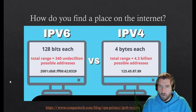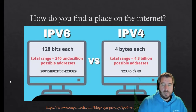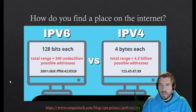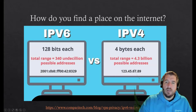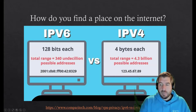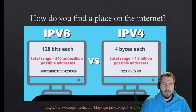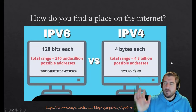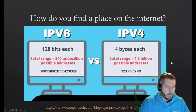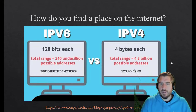It used to be something called IPv4, which used four bytes and gave you something called an IP address. In this case it looks like 123.45.67.89. The problem is that when they first came up with that, they thought: we'll do four bytes each, no big deal — we'll have 4.3 billion possible addresses, and that'll be enough because we're never going to get to 4.3 billion things on the internet.